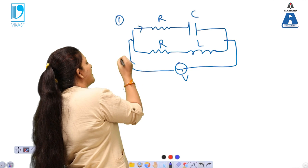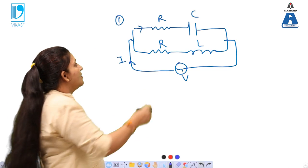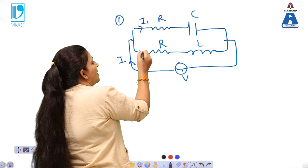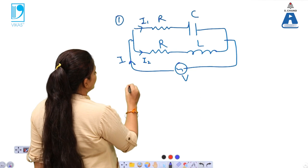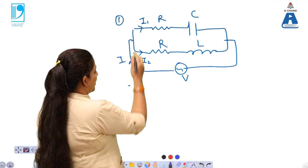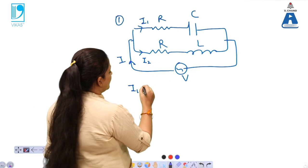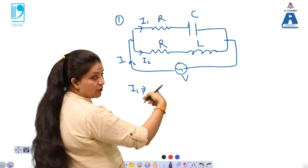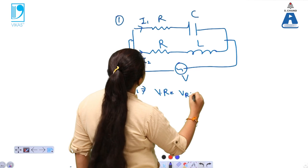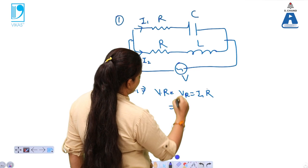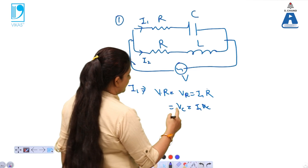The total current I flows in the circuit. In a parallel combination, the current divides: I1 flows through the first branch (R-C) and I2 flows through the second branch (R-L). For branch I1, the voltage drop across R is VR = I1 × R, and the voltage drop across the capacitance is VC = I1 × XC.